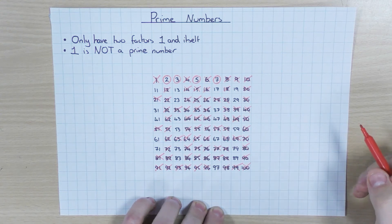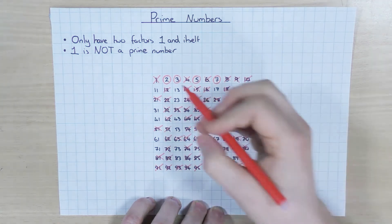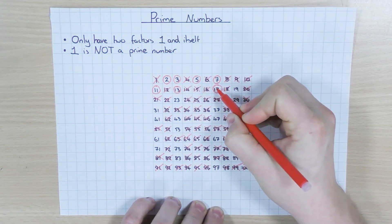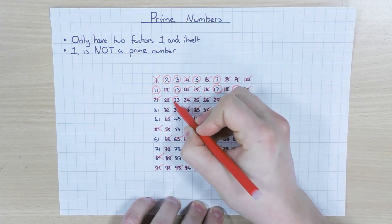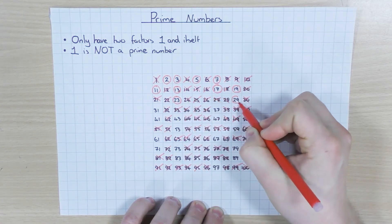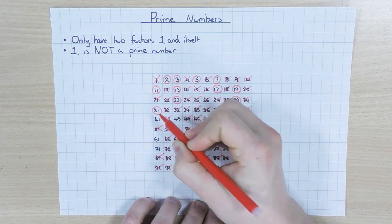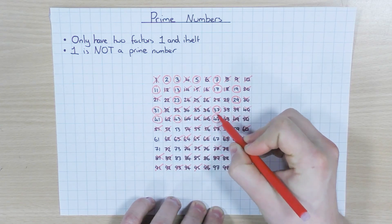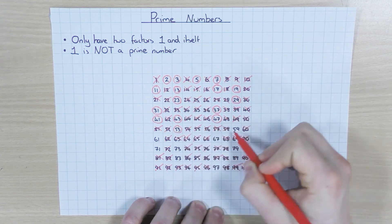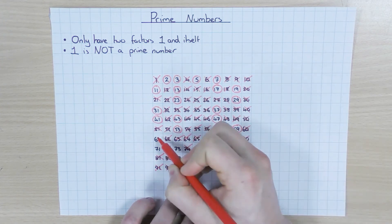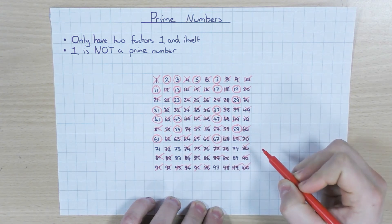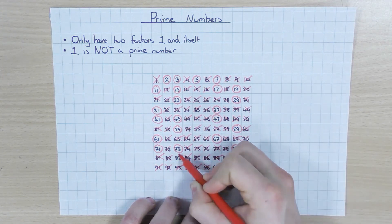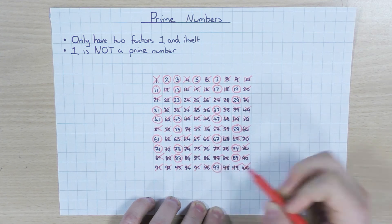So what's left now should be all the prime numbers. So 11 only has two factors, 1 and 11. Same with 13, same with 17 and 19, and I've got 23, I've got 29, obviously we've got 31 and 37, 41, 43 and 47, 53 and 59, 61 and 67, 71, 73 and 79, 83, 89 and 97.